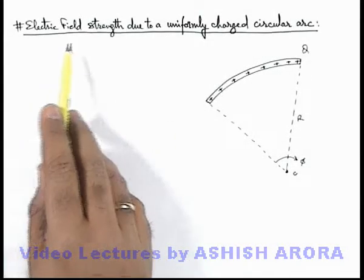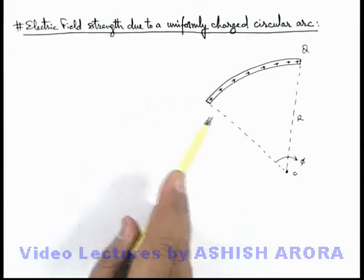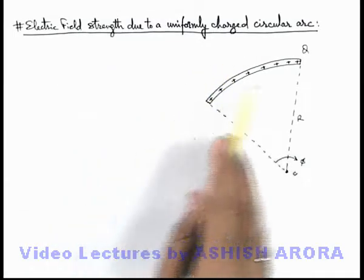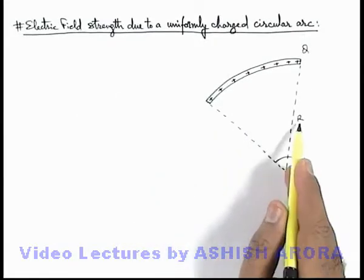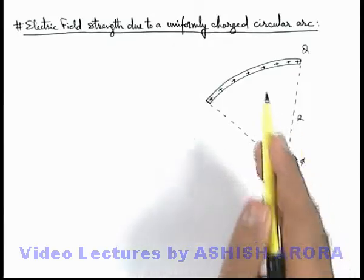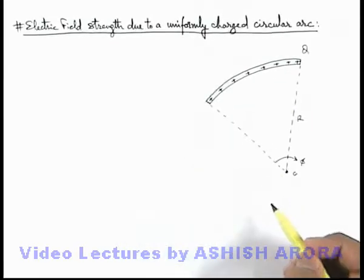Let's discuss the electric field strength due to a uniformly charged circular arc which we can see here. This is a circular arc subtending an angle phi at its center, and it is of radius r.